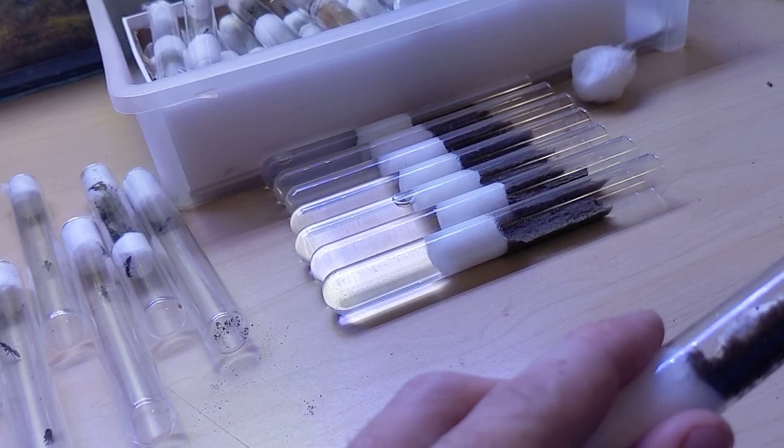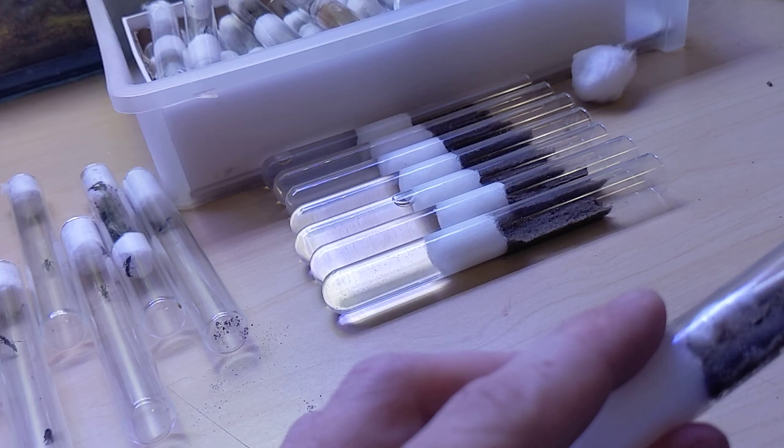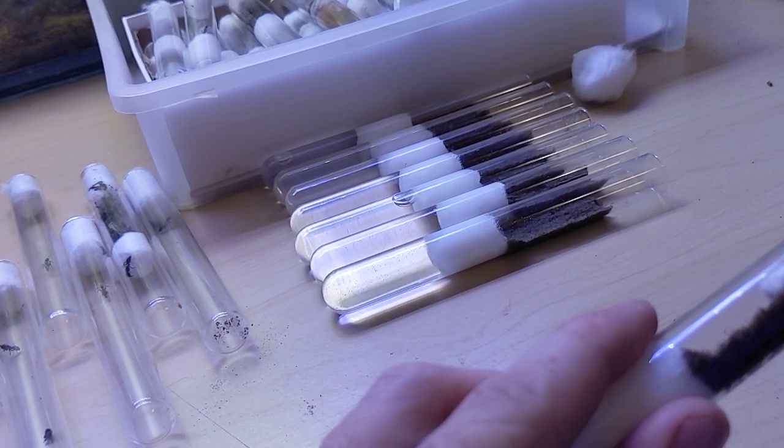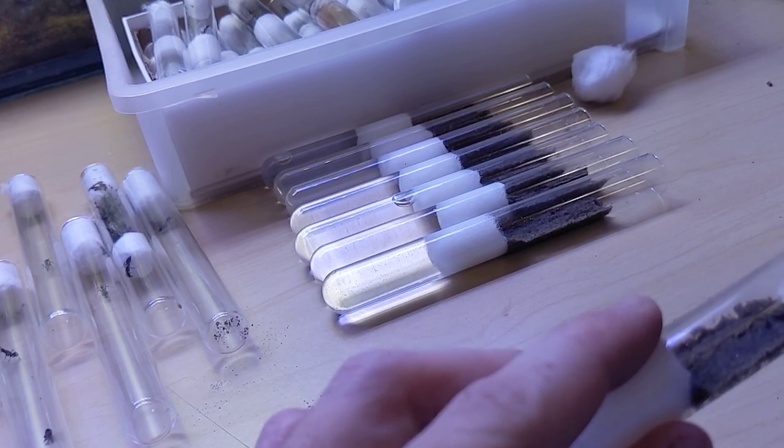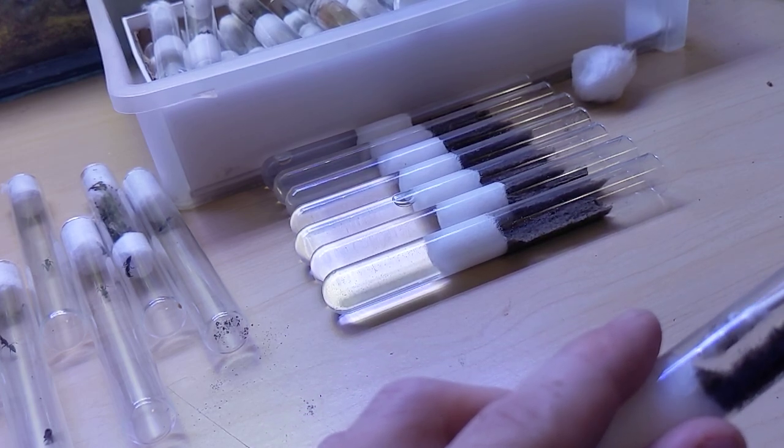And then once you have a whole colony, if you're keeping them in a formicarium, it can actually be kind of a problem because they like to take all the dirt out of the nest. So you have to make sure that they have enough dirt for their larvae to pupate.